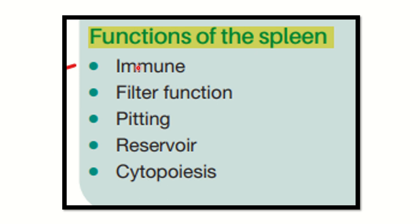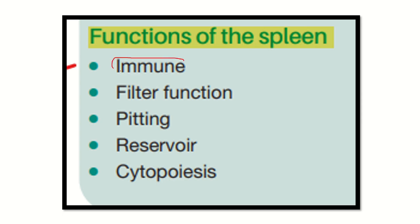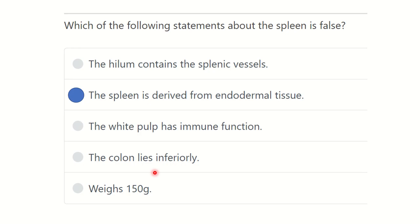The functions of the spleen include: immune function, which is performed by the white pulp; filtering function; pitting function; reservoir function; and cytopoiesis, meaning the production of red blood cells and white blood cells by the spleen.